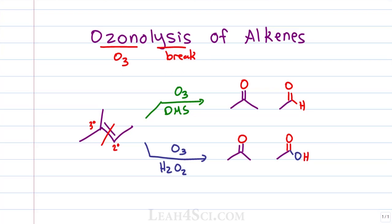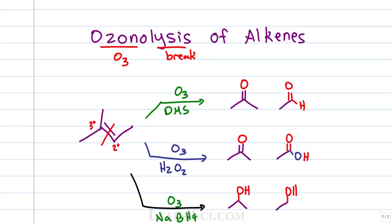The least common reaction in a general organic chemistry course uses very reductive conditions: ozone followed by a very strong reducing agent, sodium borohydride (NaBH4), which reduces carbonyls to alcohols. The tertiary carbon that breaks becomes a secondary alcohol, and the secondary carbon that breaks to become primary gives a primary alcohol. If this doesn't look familiar, it's likely because most professors won't cover it in undergrad organic chemistry.